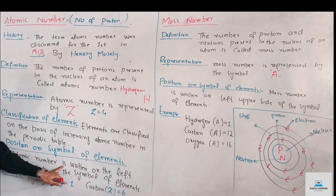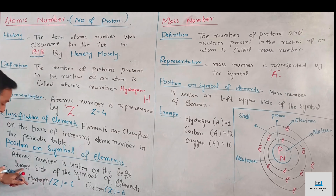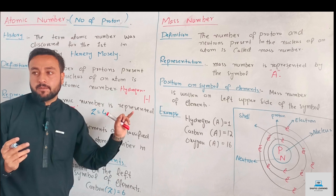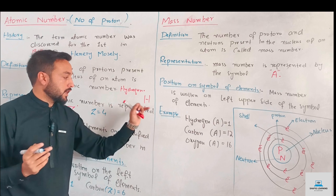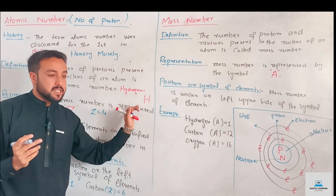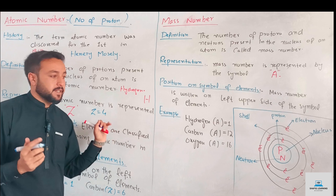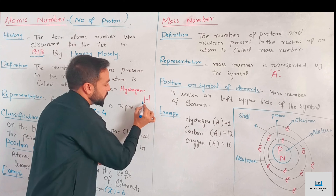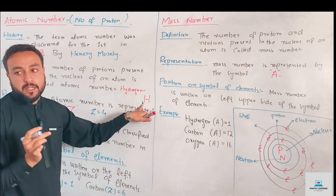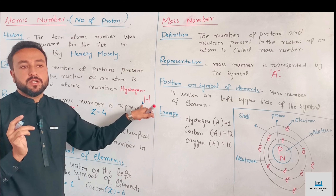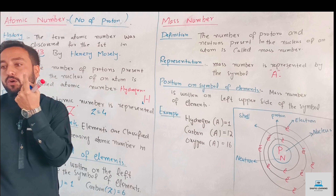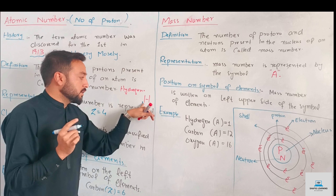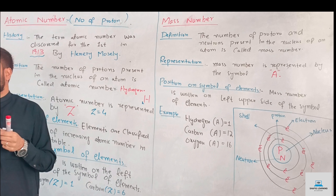The atomic number is written on the lower left side of the symbol of the element. The hydrogen atomic number is 1, which means that the hydrogen atom has 1 proton in its nucleus.